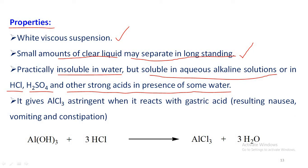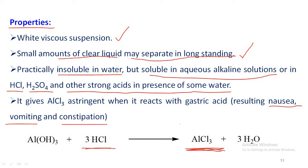When aluminum hydroxide gel reacts with gastric acid (HCl), it produces aluminum chloride as an astringent or precipitate. The formation of this aluminum chloride precipitate leads to nausea, vomiting, and constipation — that is one of the problems associated with the use of aluminum hydroxide gel.